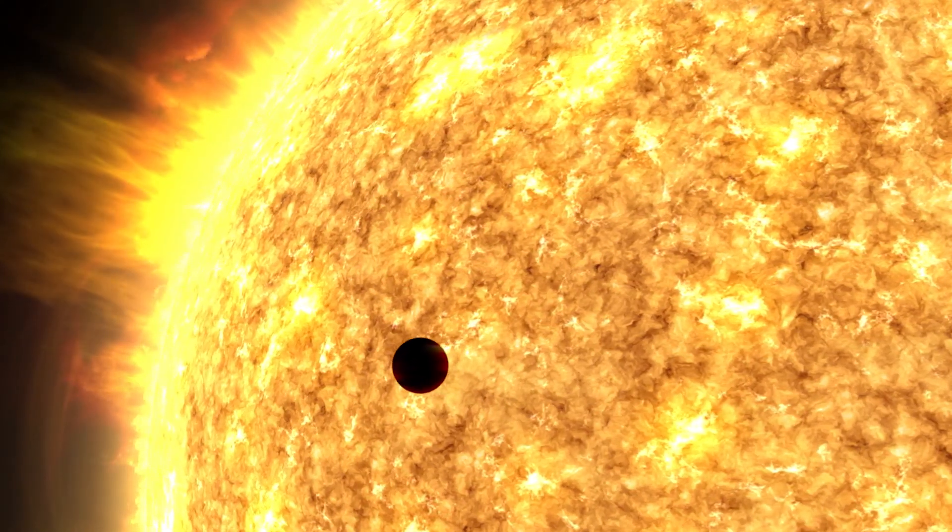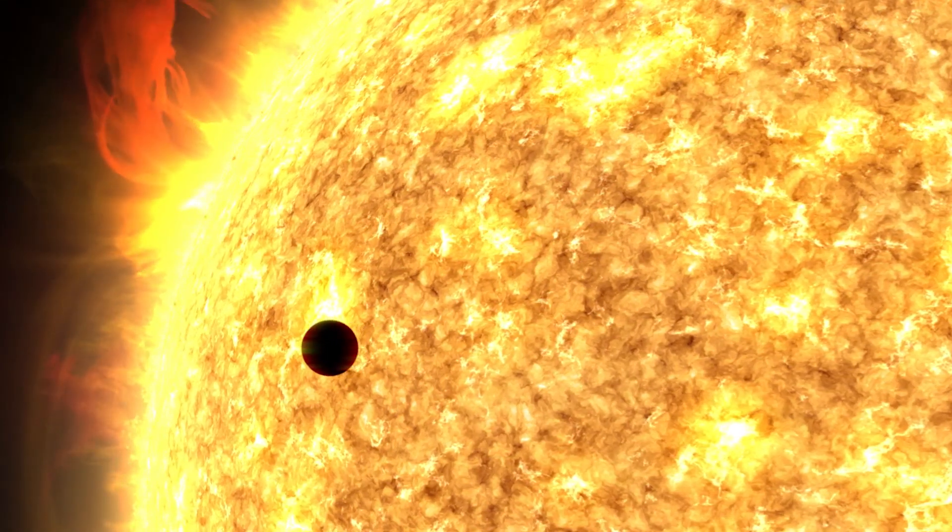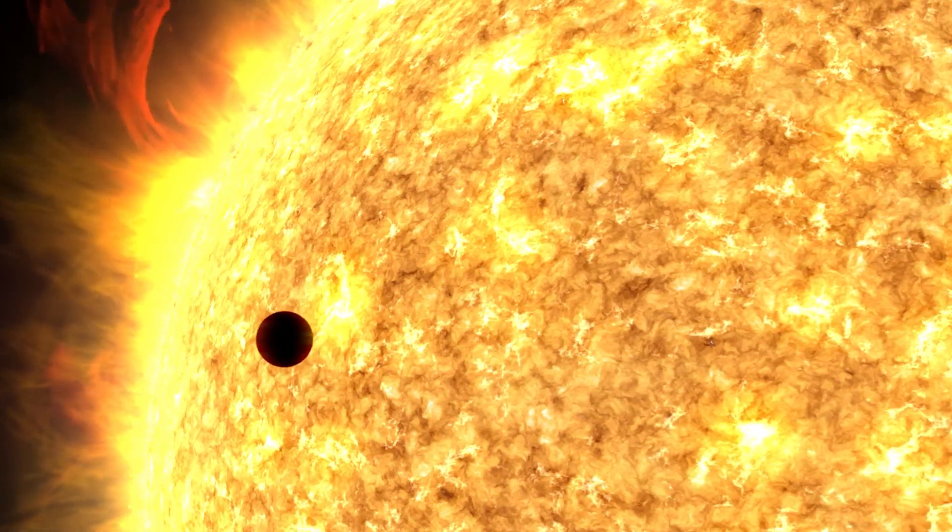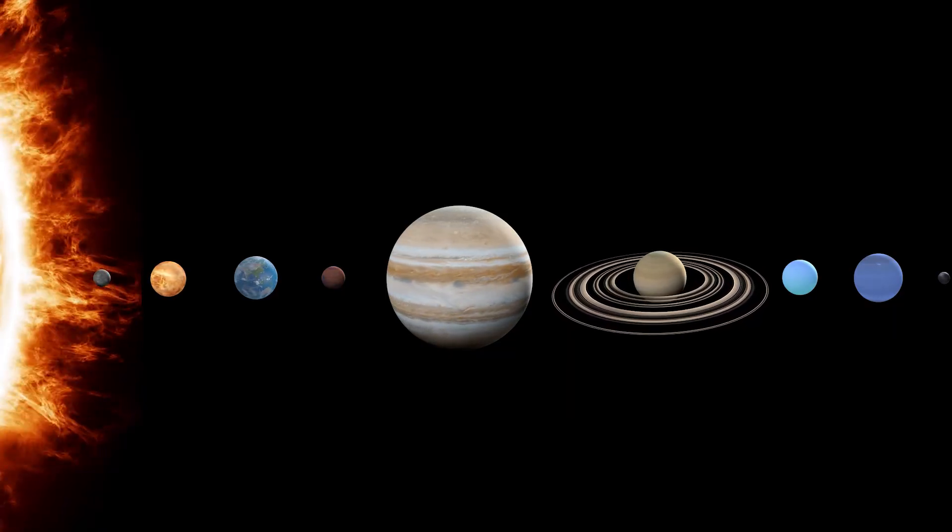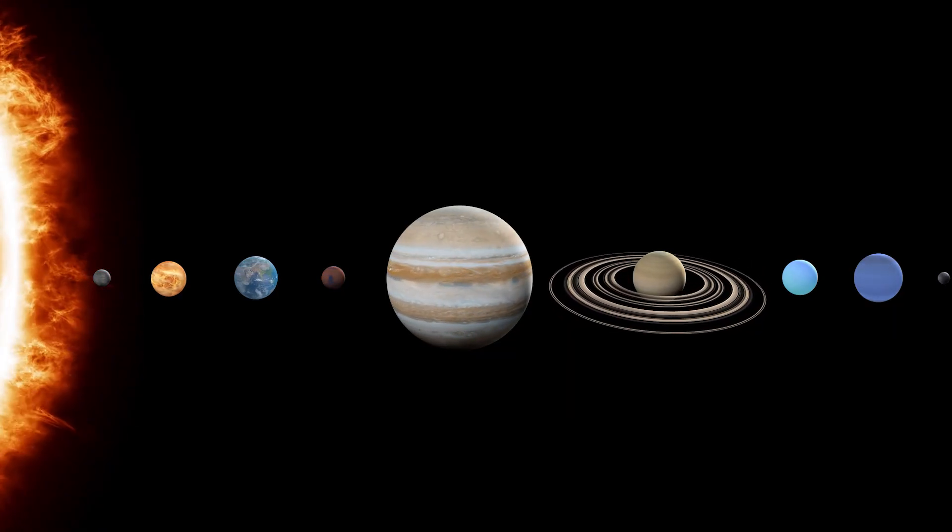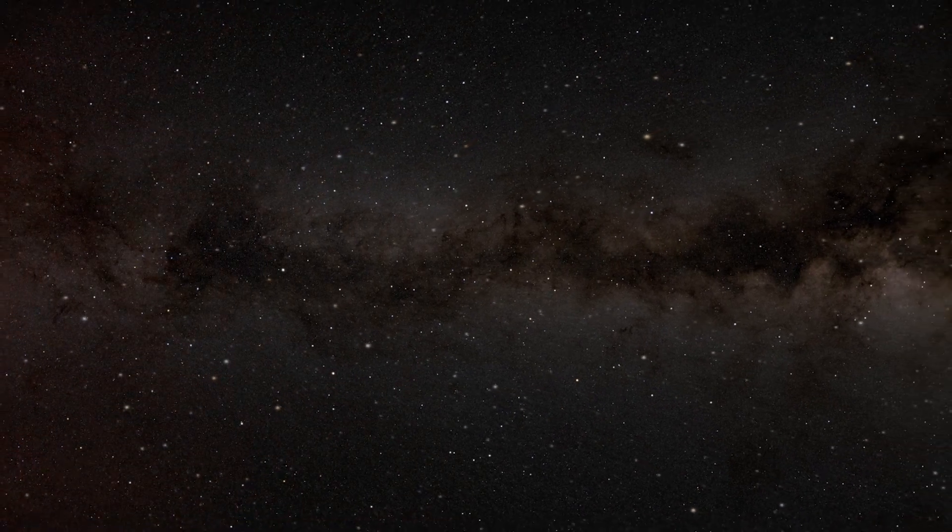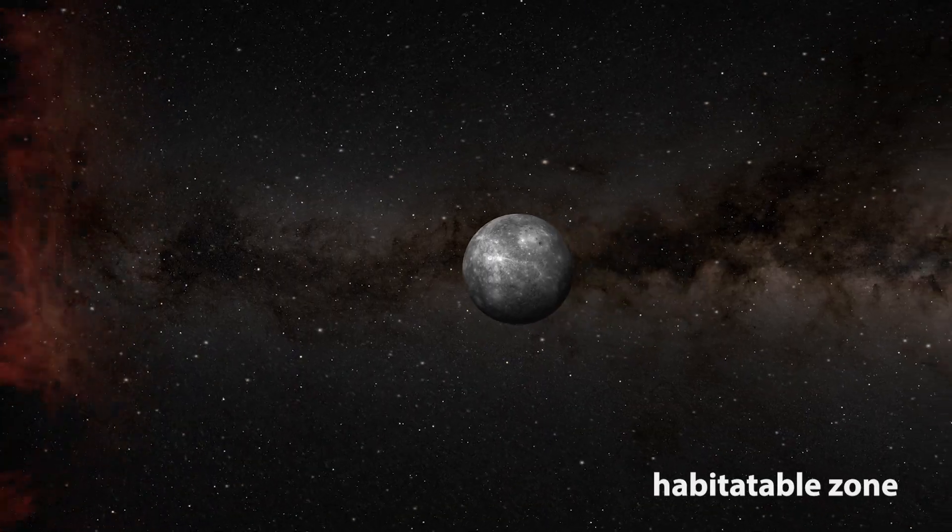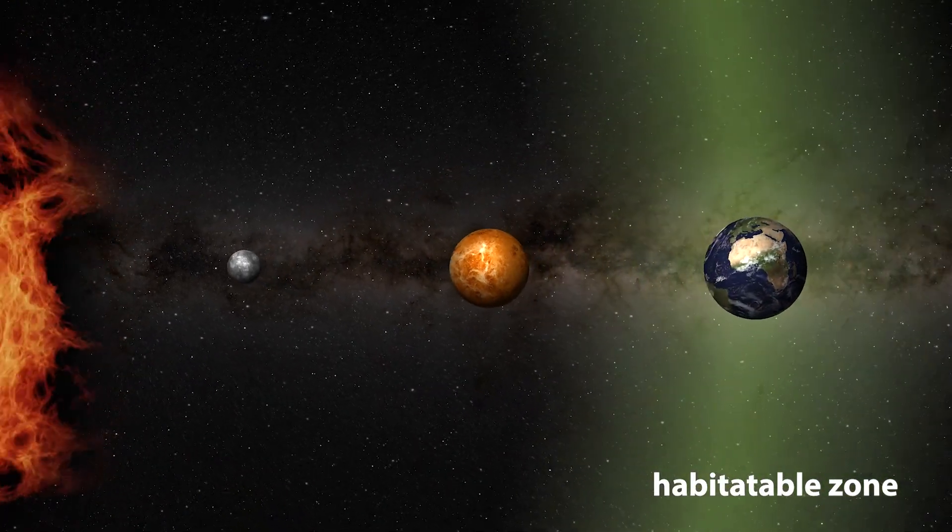On planets closer to the Sun, like Mercury, temperatures soar to levels far too high for life as we know it. And on planets further from the Sun, from Mars and beyond, conditions are too cold. Earth, however, resides in what scientists call the habitable zone, a region not too hot, not too cold, but just right for life.